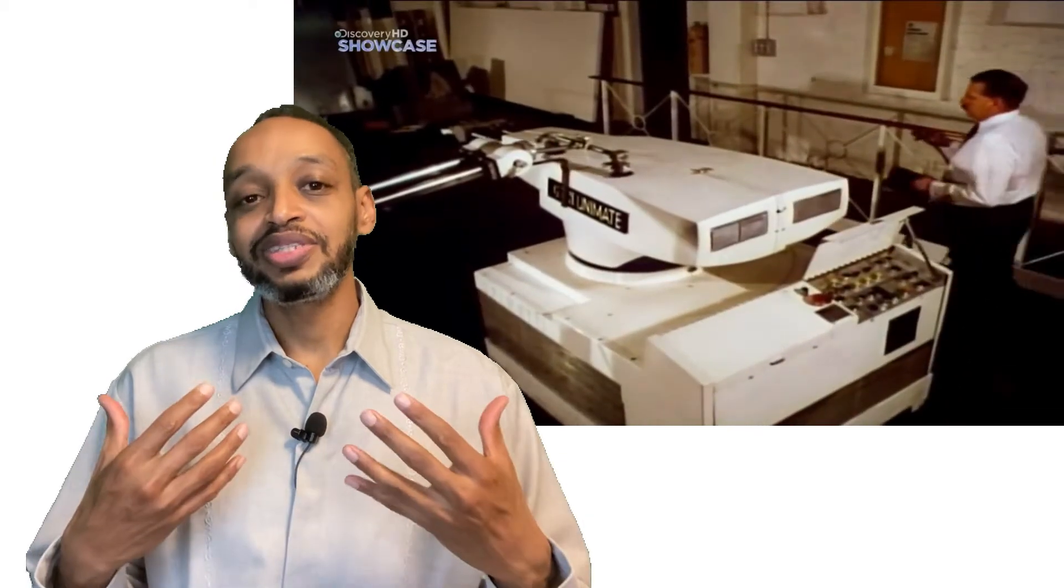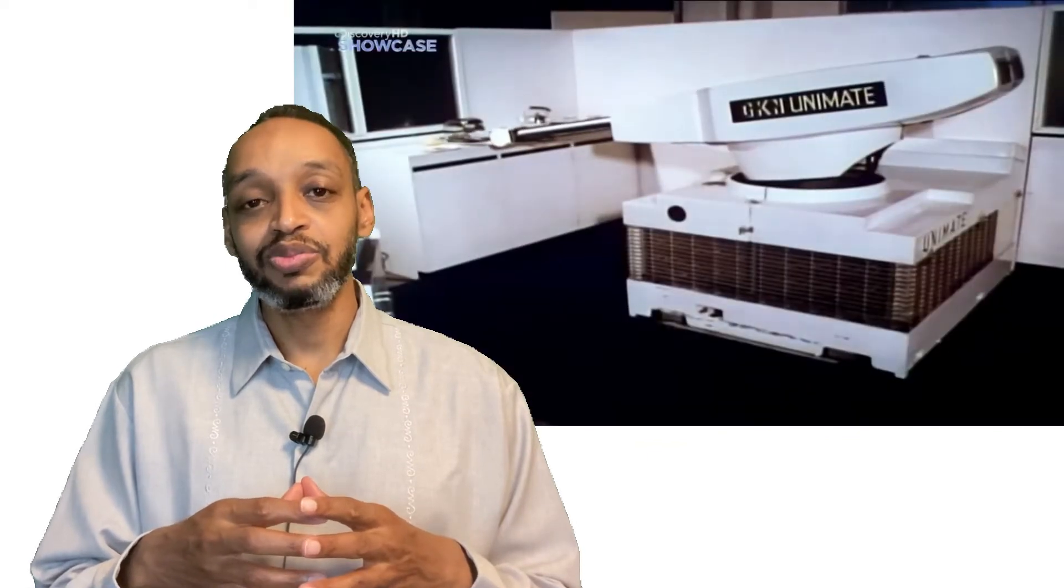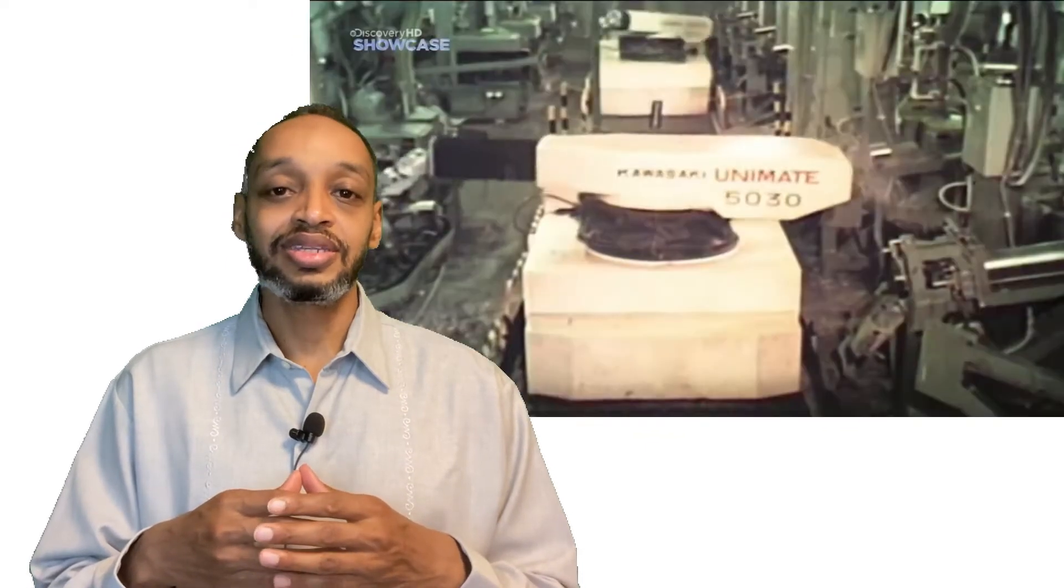But the first robot that had been entered into service was in the end of 1950s. It was first installed in 1961 in the US in the General Motors factories. Since that time it had been installed in so many automotive industries. That's why the robots have been in this shape, which is like an arm.